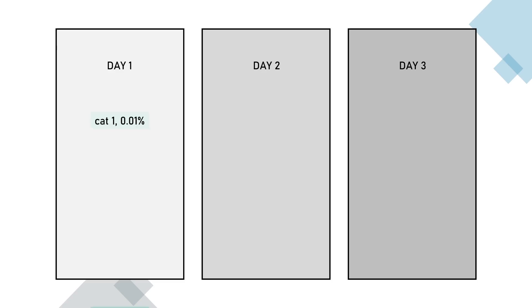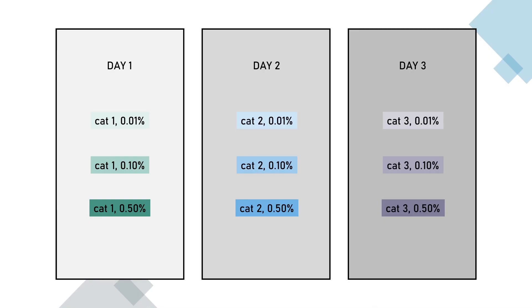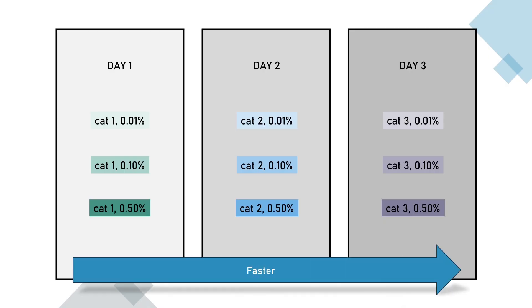Rule number two is randomization, and the concept of randomization is a very important one. Picture that you're trying to find a new catalyst for a coating system and you're testing different concentrations. On day one you test different concentrations of catalyst one, on day two you're testing catalyst two, and then day three you're testing catalyst three. And you find out that the catalytic effect increases from catalyst one to catalyst two to catalyst three.